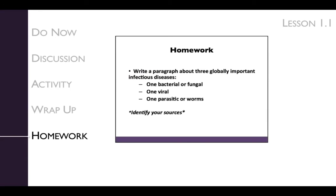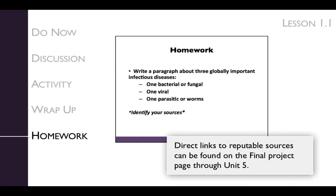For homework, have the students write a paragraph about three globally important infectious diseases. You might also consider pointing students to reputable web sources such as the CDC, World Health Organization, and the National Institute for Allergy and Infectious Diseases. Direct links can be found on the Infectious Disease Final Project page accessed through Unit 5 on the web. It is important that students complete the homework because the list of diseases generated will be a starting point for discussion of the next lesson. The teacher manual includes a substantial list of globally important infectious diseases.